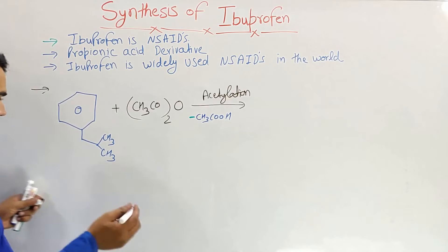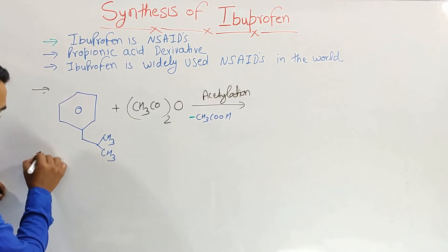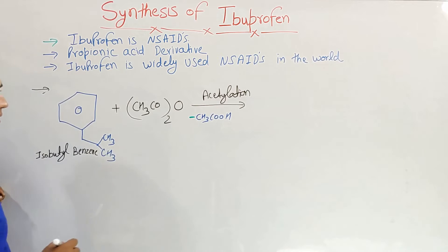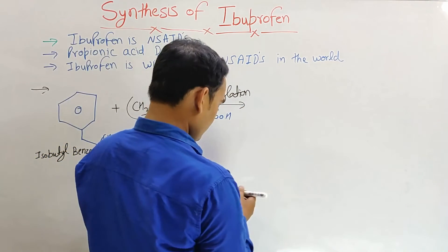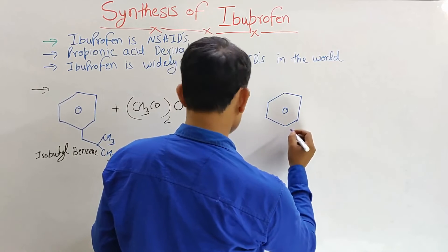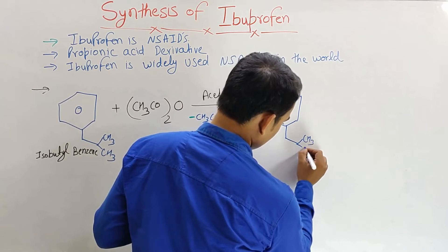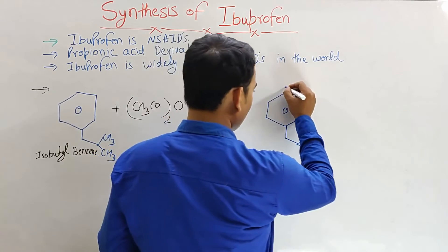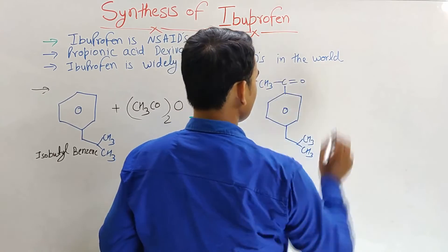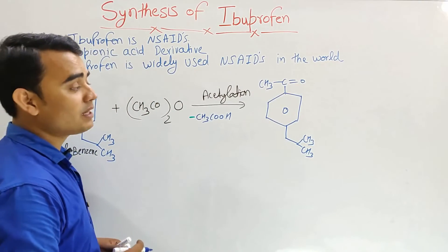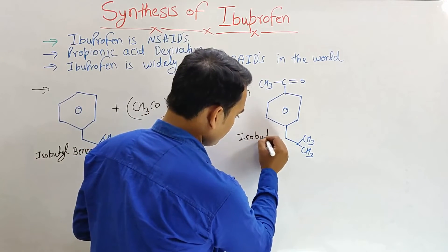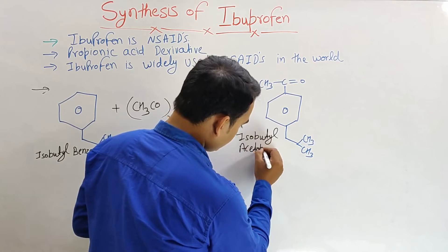After acetylation, the new intermediate formed has the isobutyl chain joined with a C=O (carbonyl) and a CH3 group. The name of this intermediate is isobutyl acetophenone.